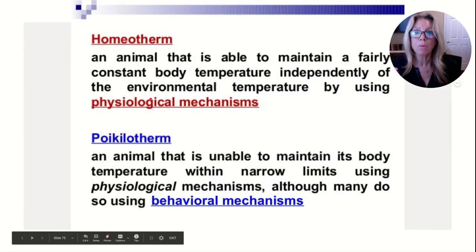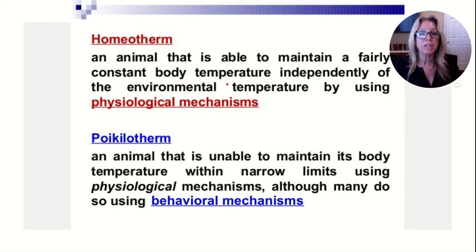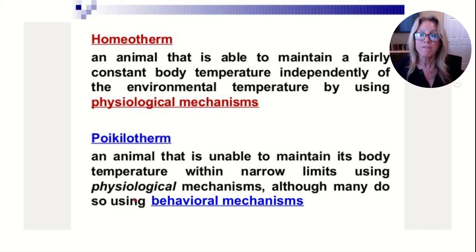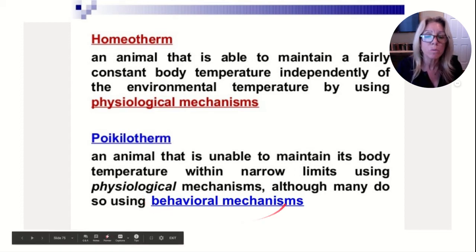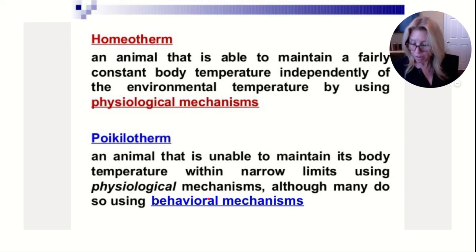Homeothermic animals — warm-blooded or endotherms — include birds and mammals. They have mechanisms to regulate body temperature. Cost-benefit analysis: it's energetically expensive, but advantageous because they can adapt to various environments. Homeothermic means a fairly constant body temperature independent of environmental temperature, maintained through physiological mechanisms. Poikilothermic animals are unable to maintain body temperature within narrow limits using physiology, though many do so using behavioral mechanisms.